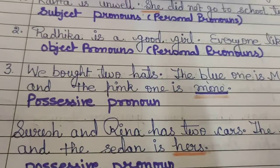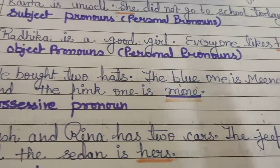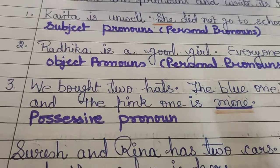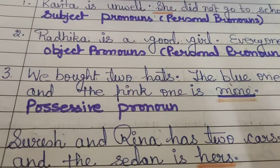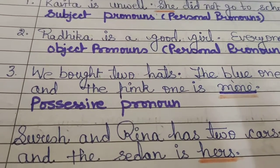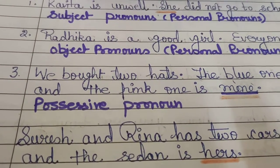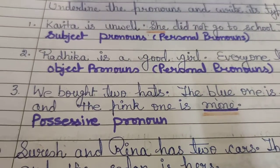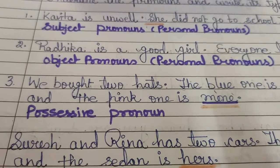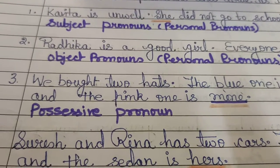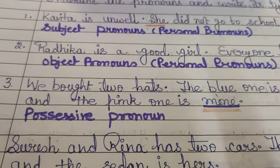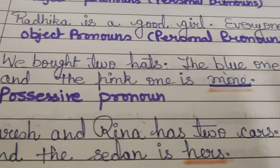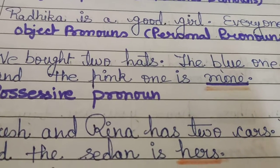Moving to the next: Suresh and Grina have two cars. The jeep is his and the sedan is hers. In the first sentence, you can see there are two nouns — Suresh and Grina — where Suresh is masculine and Grina is feminine. To show ownership or possessive pronoun, we use according to their gender: for Suresh we use 'his' and for Grina it is 'hers'. That is why it is a possessive pronoun.